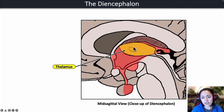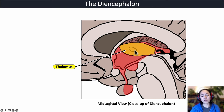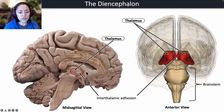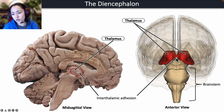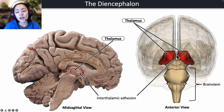The circle shown here represents the interthalamic adhesion that holds the two lobes of the thalamus together, and you can also see that in the midsagittal view of the human brain on the left. The thalamus is outlined in red. On the right, you can see the two lobes or sections of the thalamus and how that band of tissue holds them together. The space between the two sections of the thalamus is known as the third ventricle.